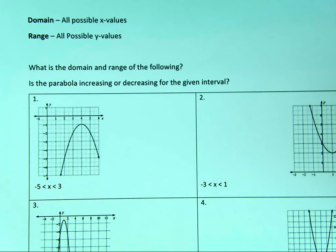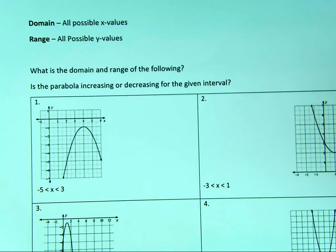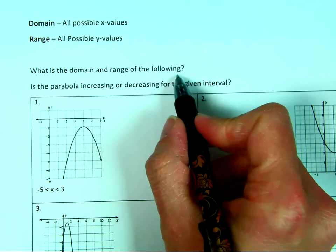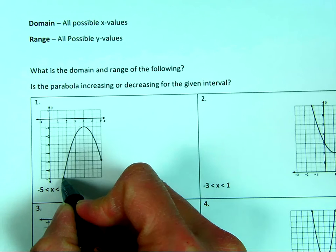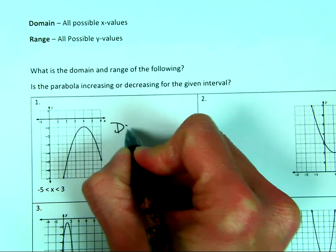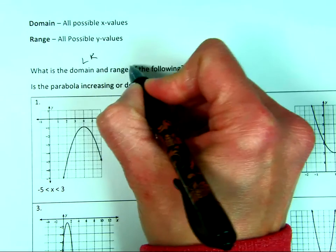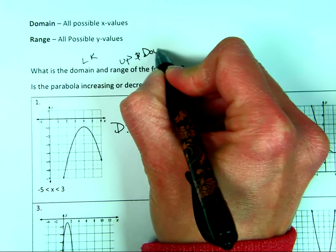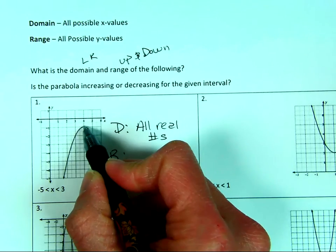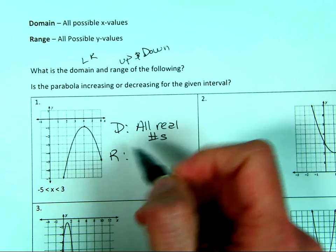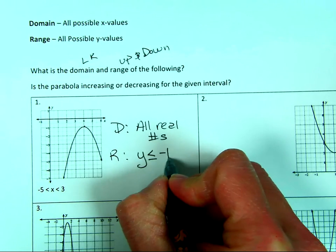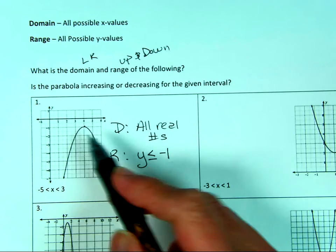Now let's talk about domain and range — you should know this from when we covered absolute values. Domain is the possible x values; range is the possible y values. For the first graph, x goes left and right forever, so the domain is all real numbers. For the range, the top of the parabola is at negative one and it goes down, so the range is y less than or equal to negative one.